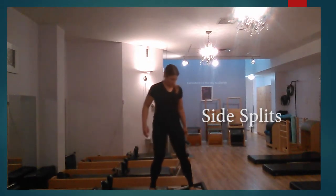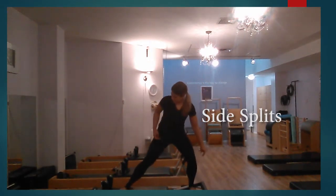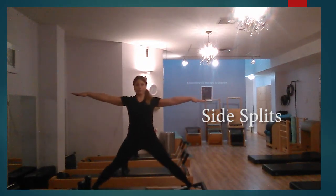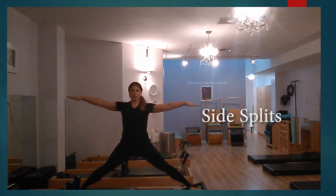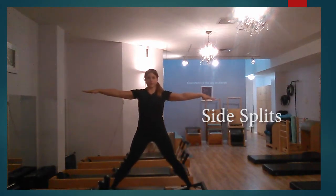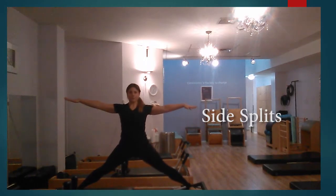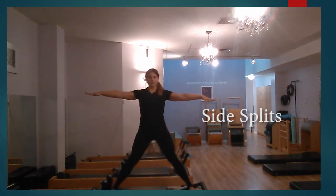Side splits on the reformer is an advanced exercise that requires strength and balance. The ideal movement glides the carriage out three to four times with the arms held abducted in a T position. There is a pause on the out moment and a pause on the in moment to challenge the control and strength of the client.